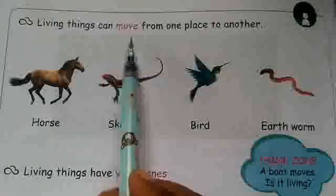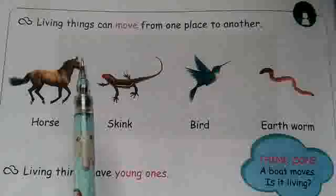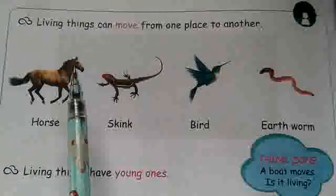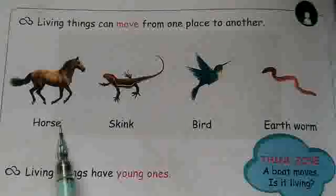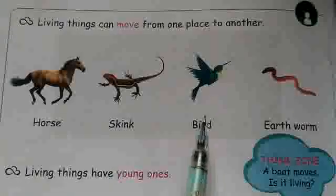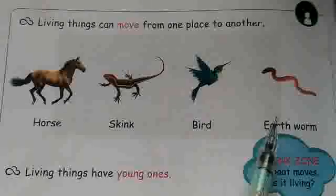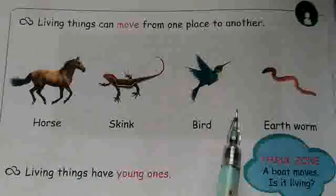Living things can move from one place to another. A horse can move. A skink can move. A bird can fly and move from one place to another. An earthworm — it is like a reptile — also moves. So these all move from one place to another, so they are living things.